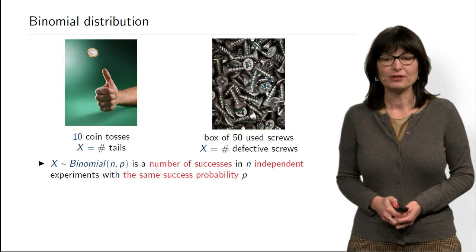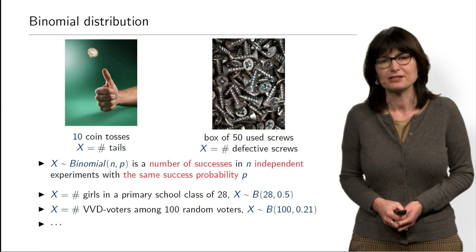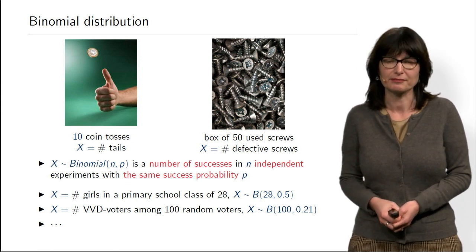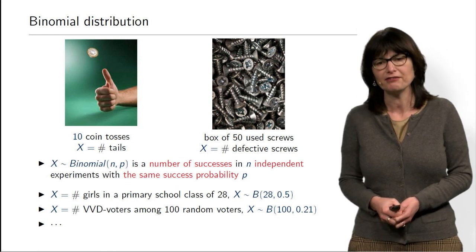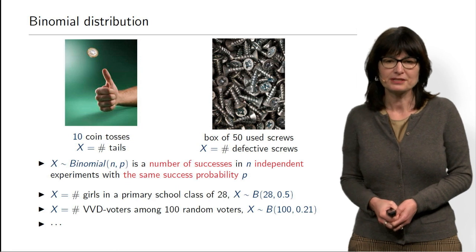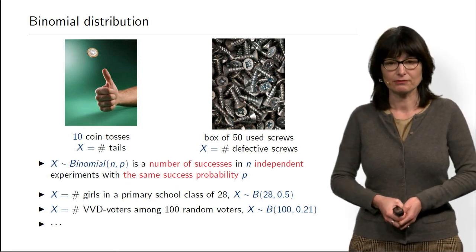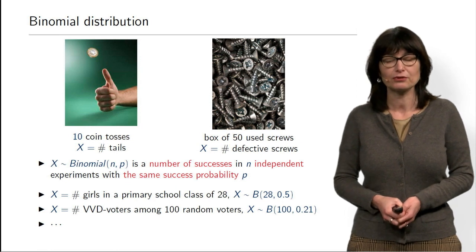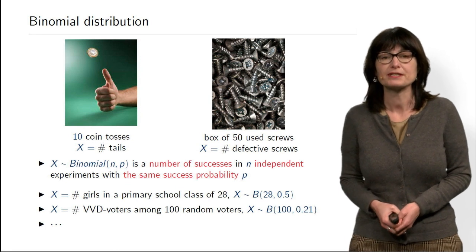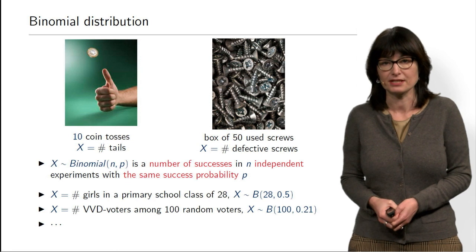We also considered many examples. If you consider a class of elementary school children, they can be boys and girls with probability one-half, and the number of girls in the class will be binomially distributed. In a classical voting poll, if you ask 100 random voters which party they are going to vote for, then the number of voters for a particular party also will have binomial distribution or can be modeled as such.